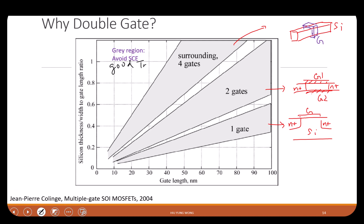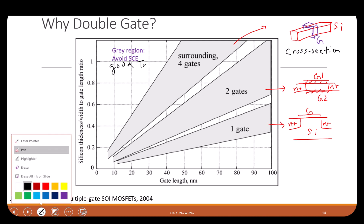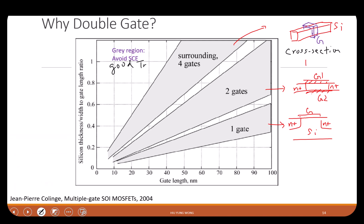To show what this looks like, I'll take a cross section under the gate. It will show the silicon in the center, and then the gate surrounding it on all sides. So you can see that I'm controlling the wire by the gates surrounding it.